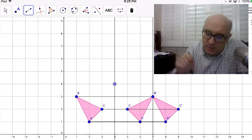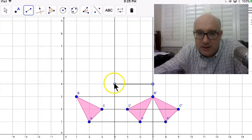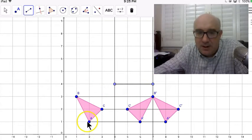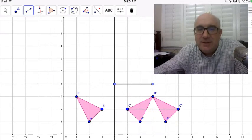The other thing we want you to notice is the distance here. The distance is 3 between the parallel lines. 1, 2, 3, 4, 5, 6 is the distance of the translation.